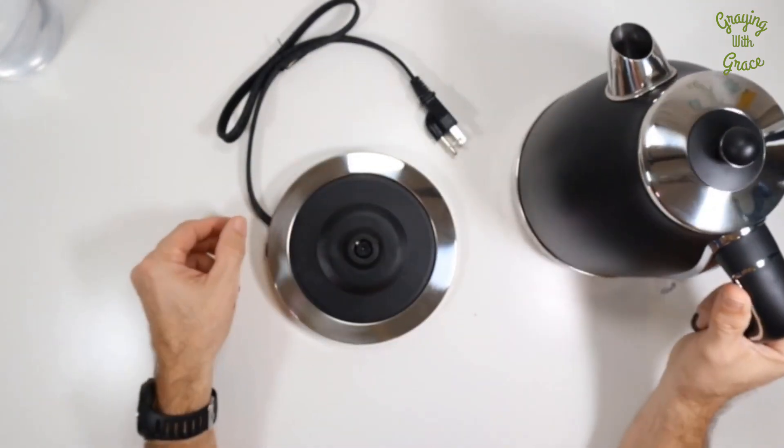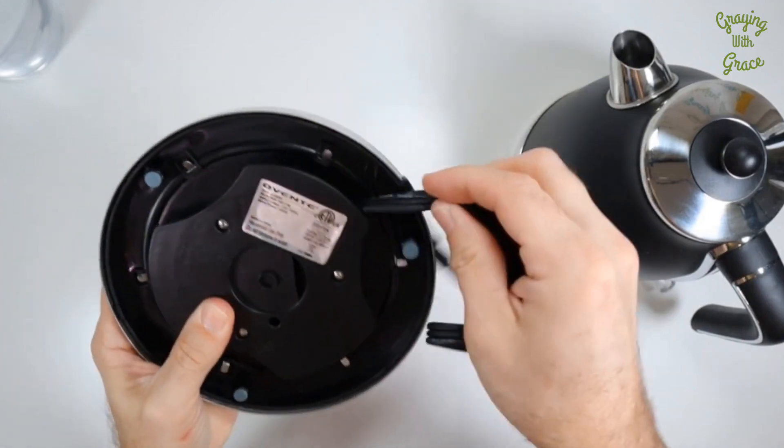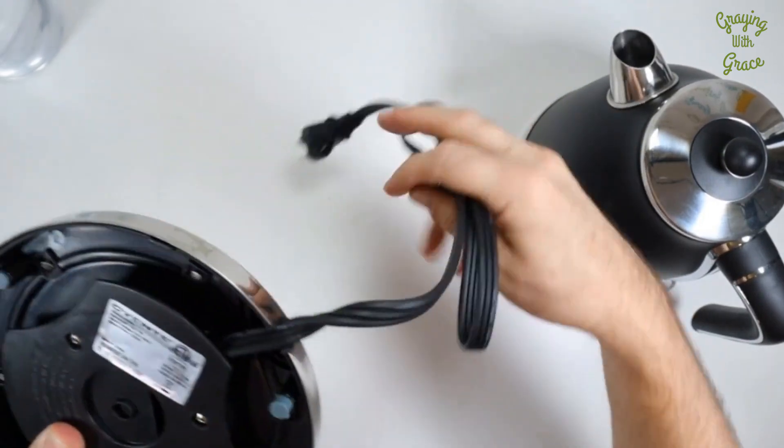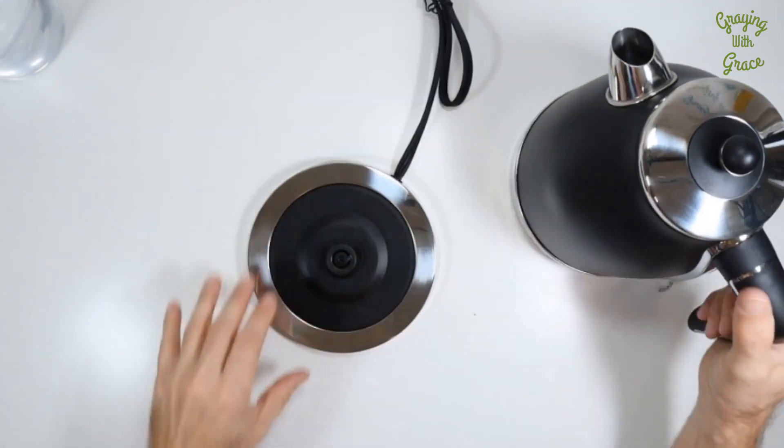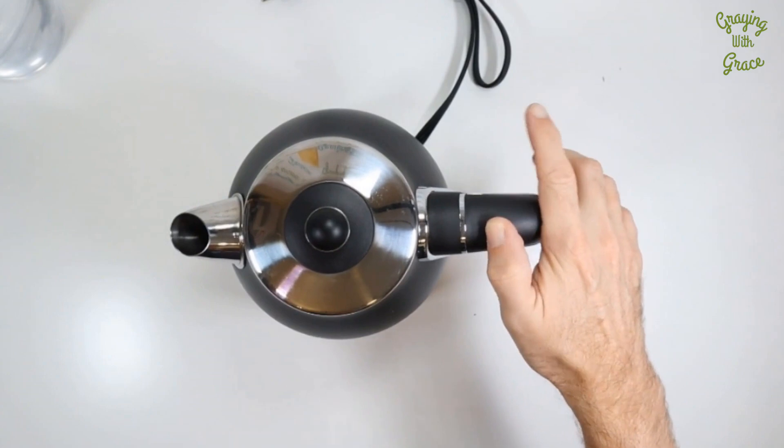First thing to know about it is it's got a nice-looking stainless steel base on it. Always make sure you run the cord through this opening in the base. That keeps the base flat, so that way your kettle always remains stable and unlikely to tip.